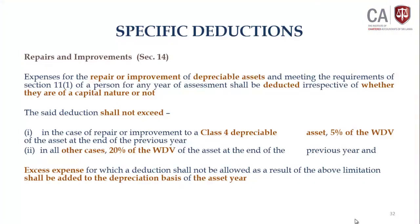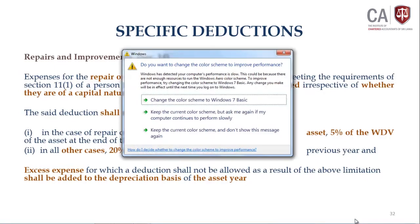What happens to the excess amount above the ceiling? The excess expense shall not be allowed but shall be added to the depreciation basis of the asset. The excess amount not allowed under this section will be added to the cost of the asset — the depreciation basis — and thereafter you can claim capital allowance on that cost under Section 16. So the unclaimed repair and improvement cost will not be lost; it will be added to the depreciation basis.